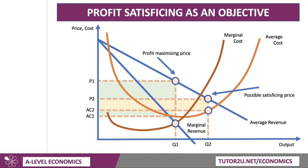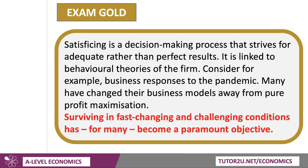So there is your satisficing diagram — hopefully that makes sense to you. It's a complex diagram, but A-levels are not easy. Satisficing is best defined as a decision-making process that strives for adequate, acceptable rather than perfect results. And crucially, satisficing is linked to behavioural theories of the firm. Think about the pandemic: a lot of businesses that were profit-maximising before the pandemic may have altered their business models away from pure profit maximisation because the challenge has been to survive. Surviving in fast-changing and challenging conditions, both at a micro and macro level, has for many firms become a paramount objective, moving away from pure profit maximisation towards satisficing.